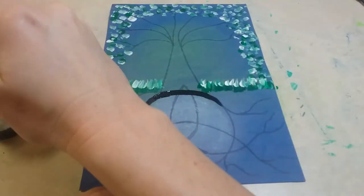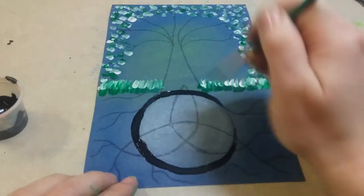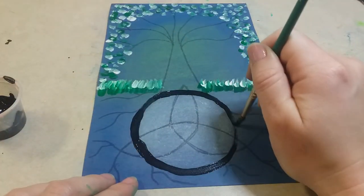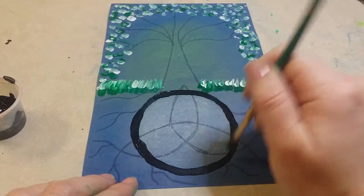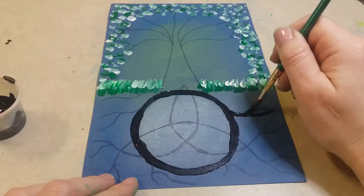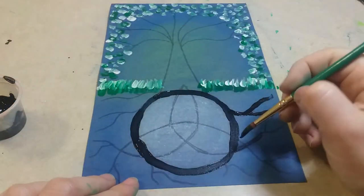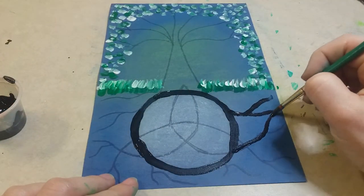Again, if you find that you made those pencil lines too close together, then I want you to just avoid doing them and just stick with the ones that you feel like are gonna look like roots. So don't be afraid to just avoid those pencil lines if you added too many.